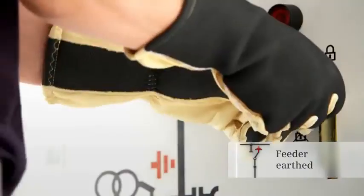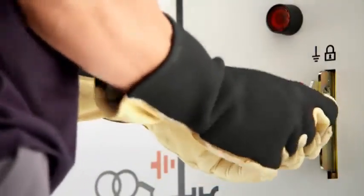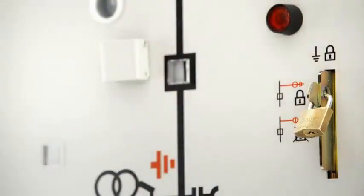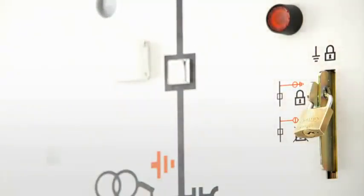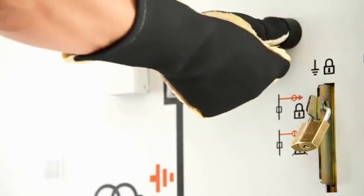A locking device interlocks the switchgear in the current switch position. De-earthing this feeder is now disabled, i.e. the circuit breaker cannot be switched to the open position.